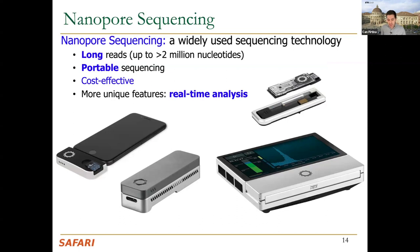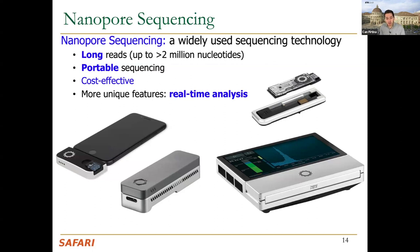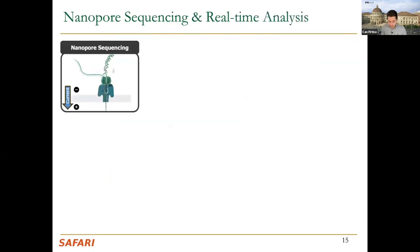Nanopore sequencing is a widely used technology with significant advantages. It can generate long reads up to two million nucleotides — a single read can be two million bases. These sequencers can be very small, fitting in the palm of your hand, enabling portable sequencing. They are relatively cost-effective and provide unique features enabled by real-time analysis not available in other sequencers.